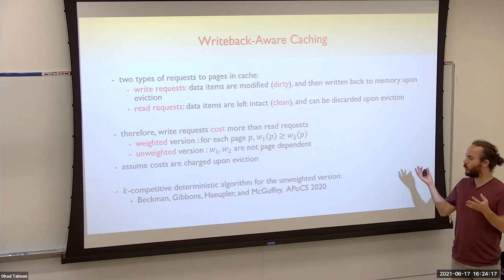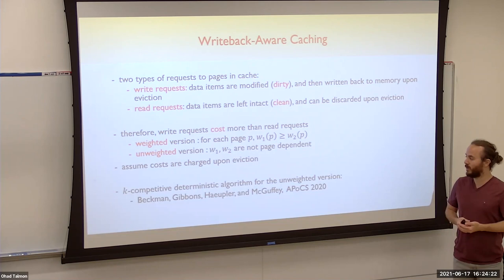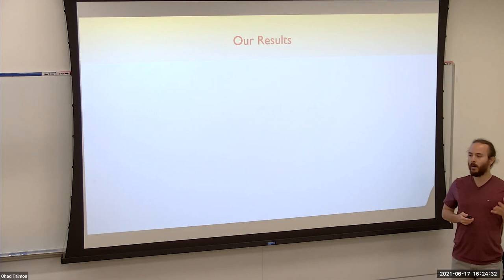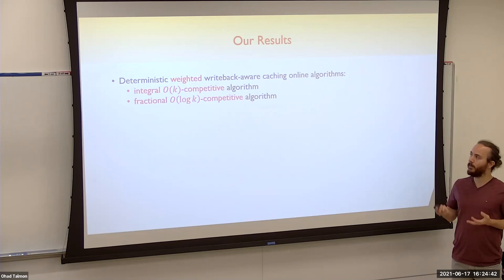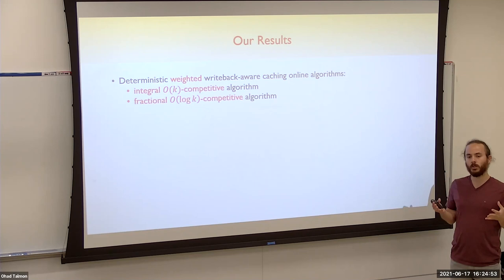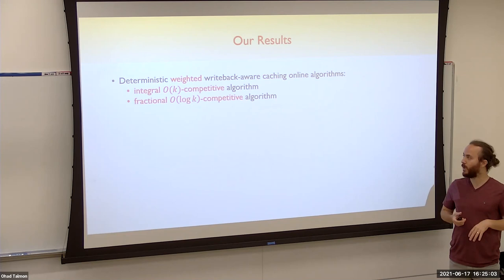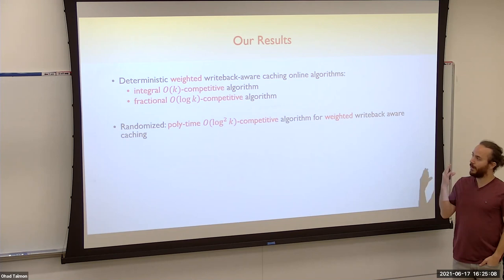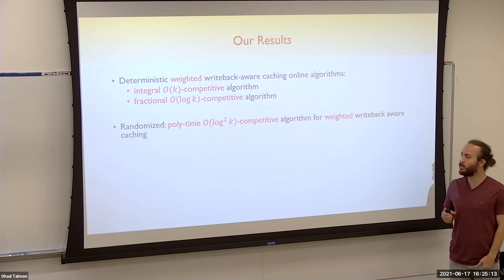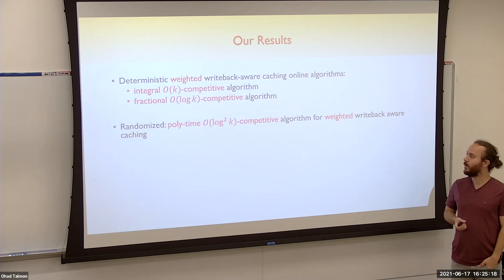A recent work by Beckman and Fox in 2020 showed there is a k-competitive deterministic algorithm for the unweighted version. Our main results are for weighted writeback-aware caching and a generalization of it. We give a deterministic weighted algorithm: an integral order-k competitive algorithm and a fractional order-log-k competitive algorithm. We also give a randomized algorithm which is an order log²k competitive algorithm for weighted writeback-aware caching, and importantly this randomized algorithm is poly-time.